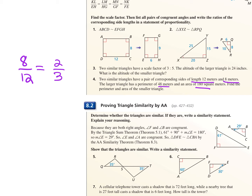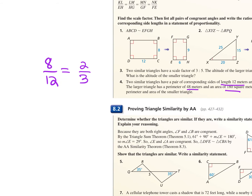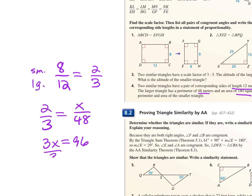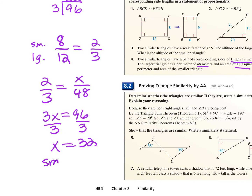When we set up our proportion, the 12 is from the larger triangle and 8 is from the smaller. The perimeter they gave me was from the larger triangle, so I put 48 in the denominator next to the 3. Cross multiply: 3x = 2 times 48, which is 96. Divide by 3: 96 divided by 3 gives 32. So the perimeter of the smaller triangle is 32 meters.